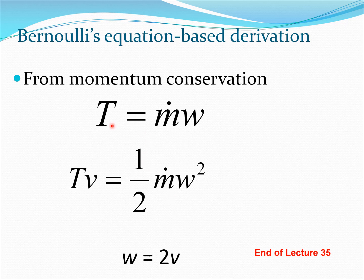Using these two formulas, I take T = ṁw and put it here. If I put it here, I immediately get a cancellation of ṁ and w, and so I get w = 2v.